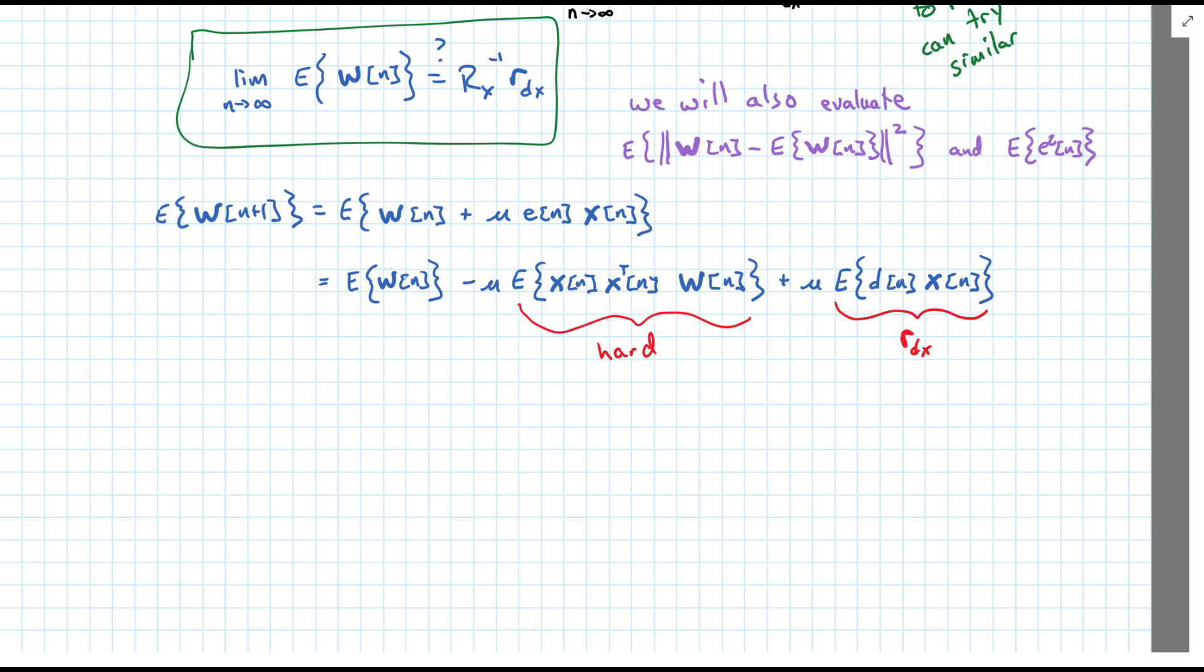And to demonstrate why, it's because w of n is actually changing over time as a function of x. So we have this x, x transpose, which we know how to deal with, that's the autocorrelation matrix, times w.